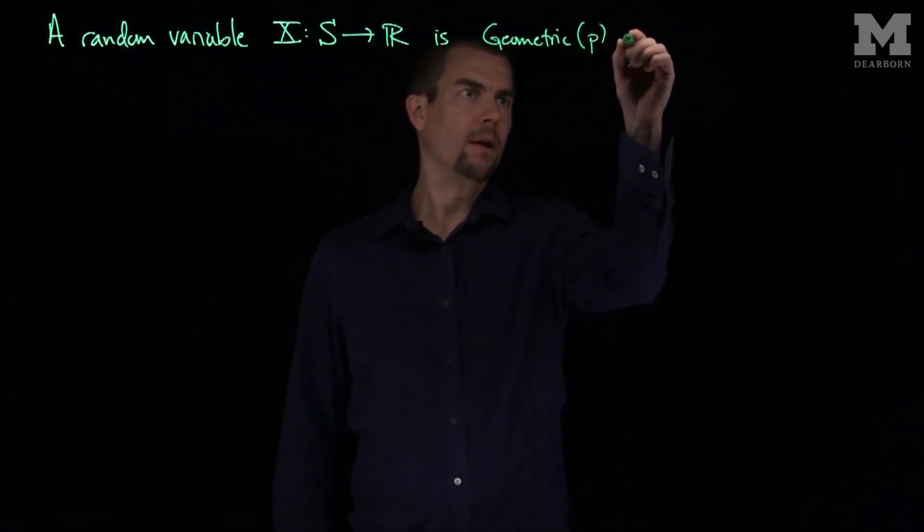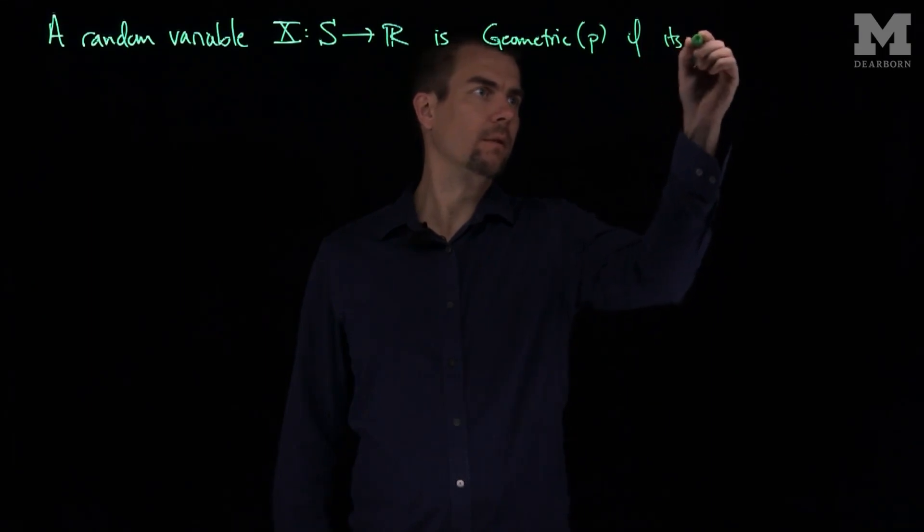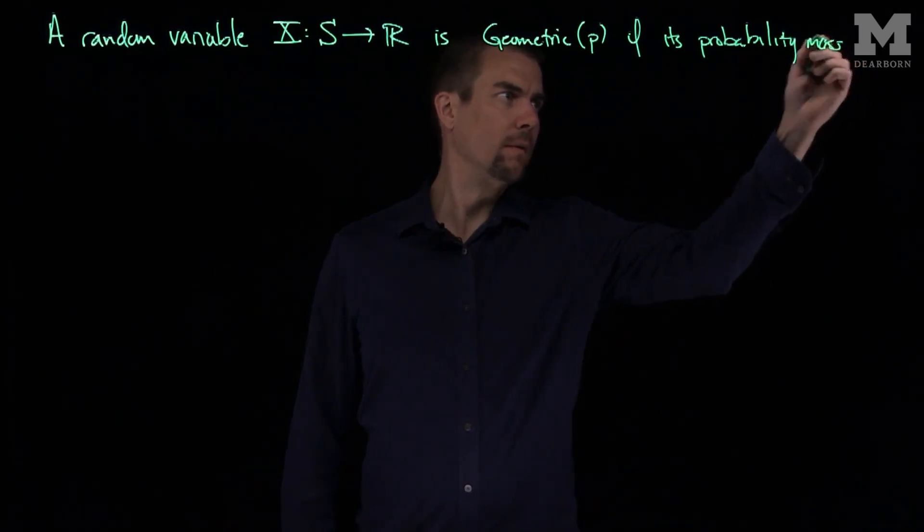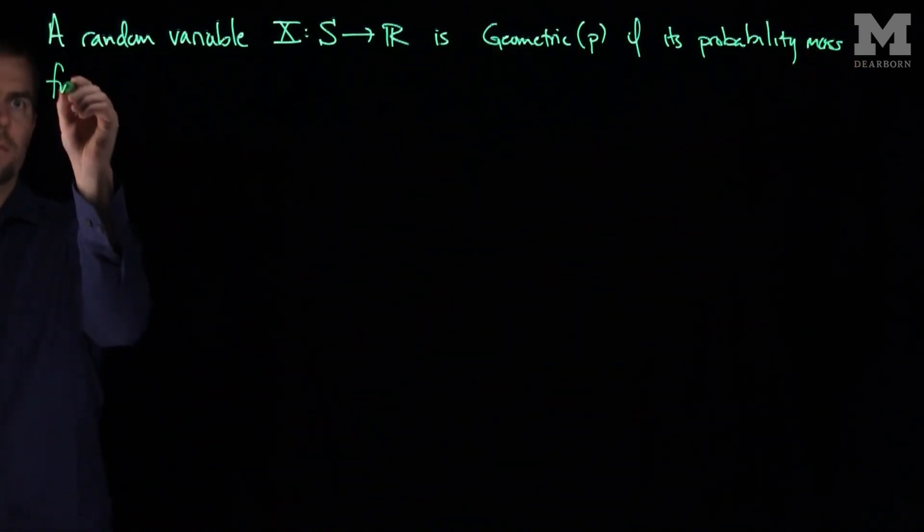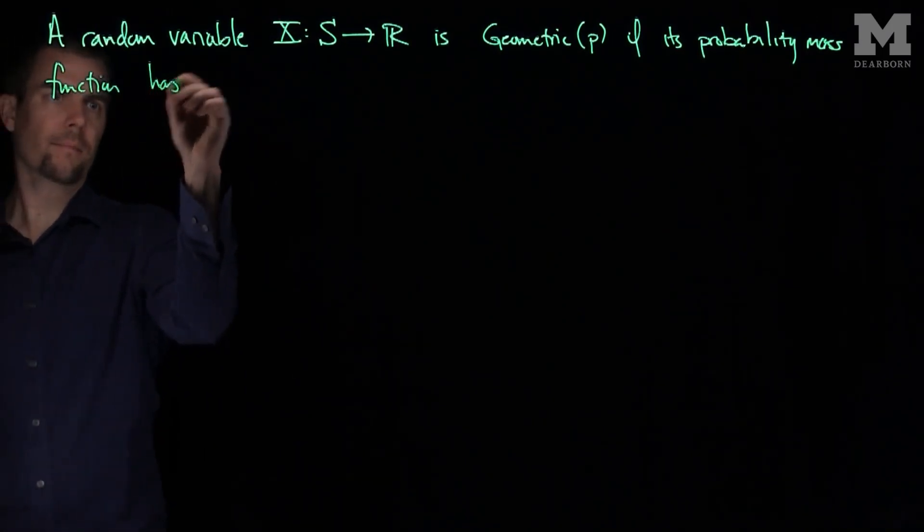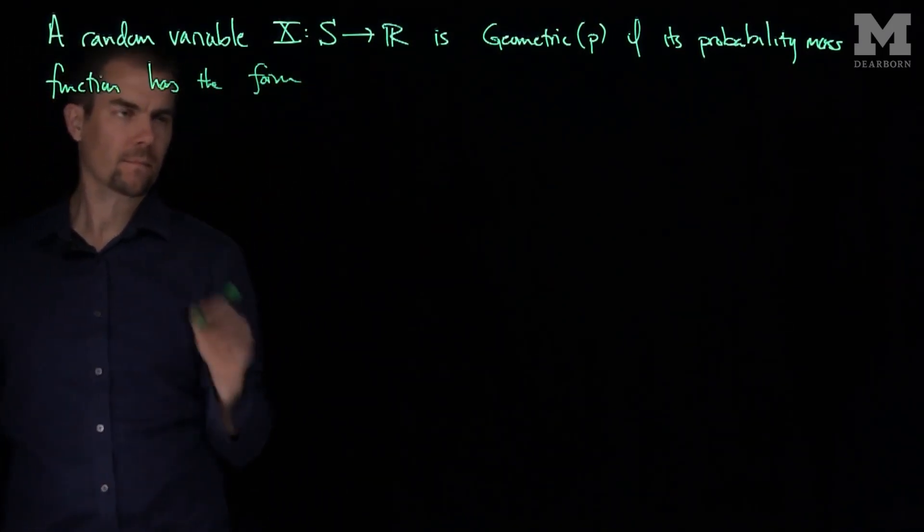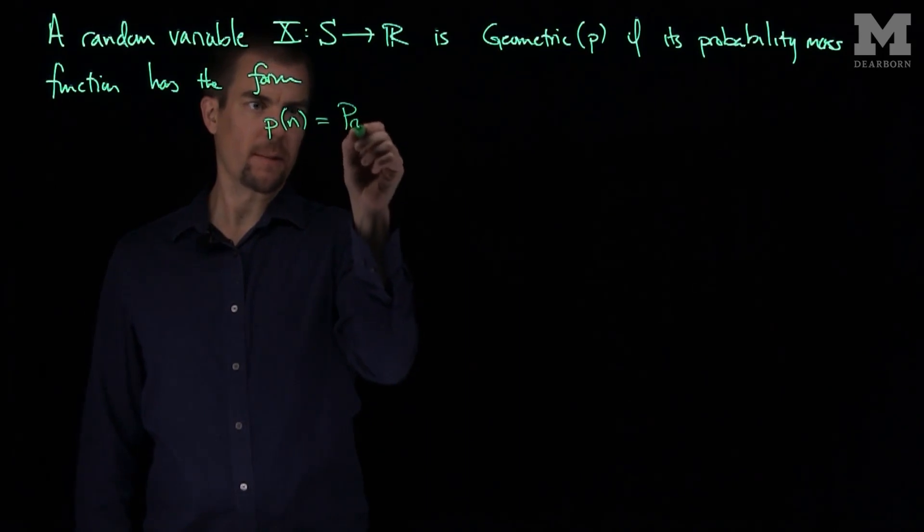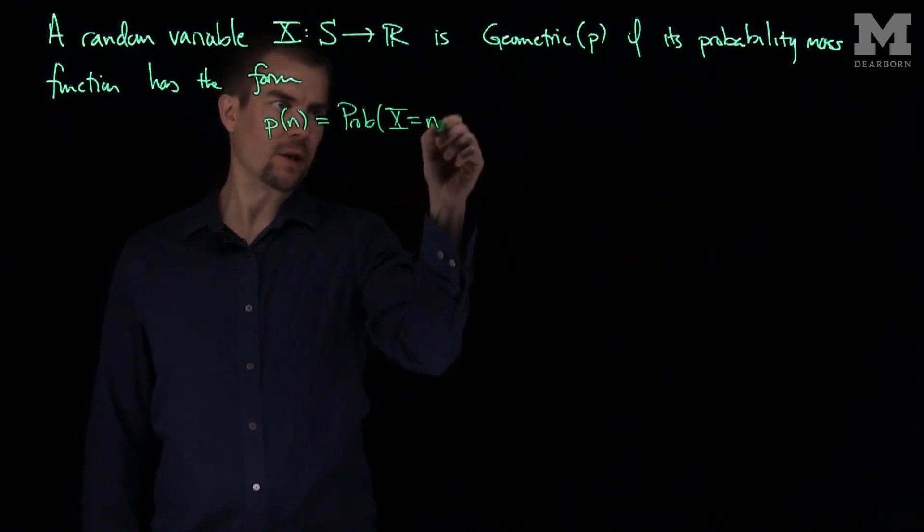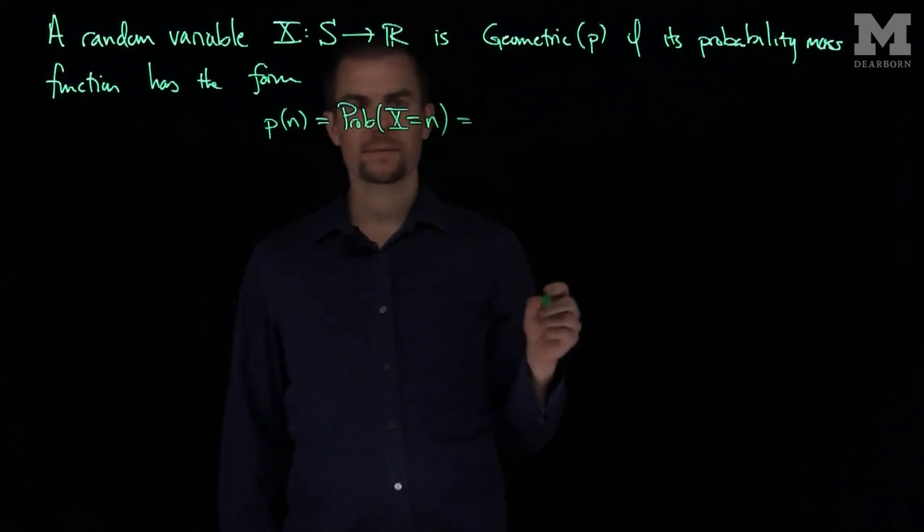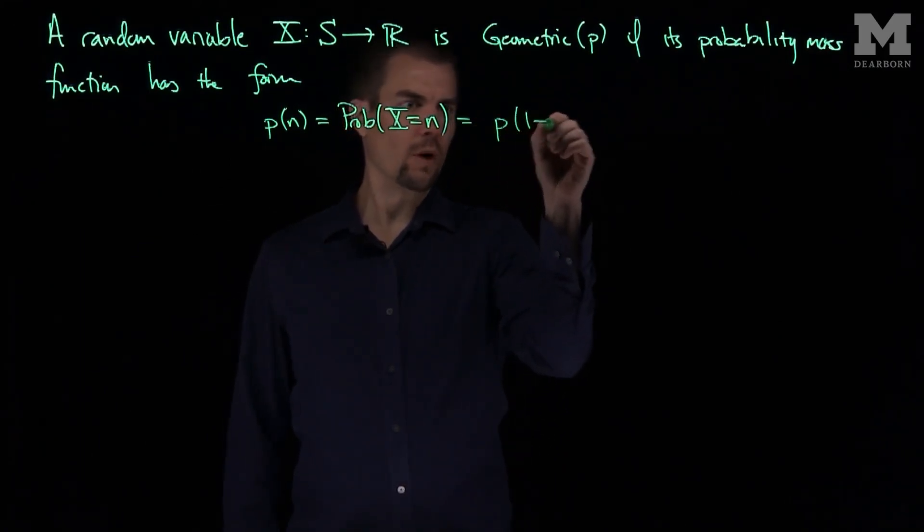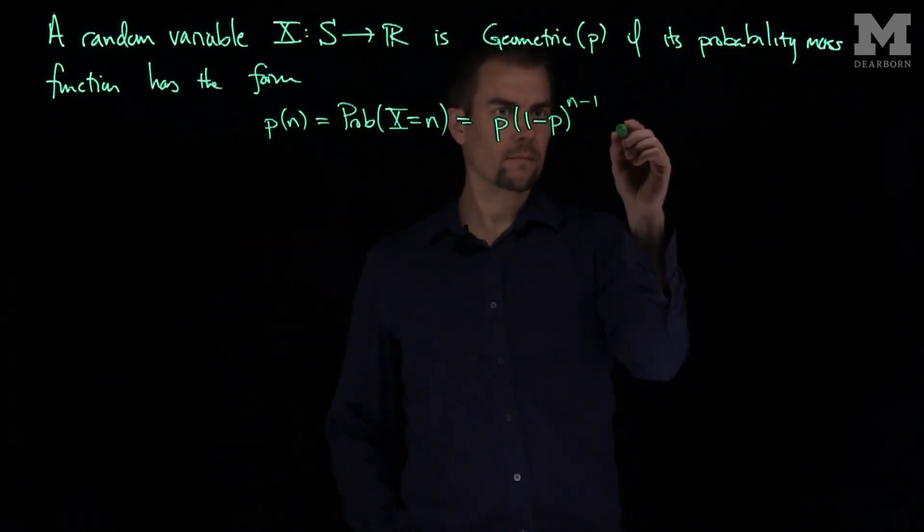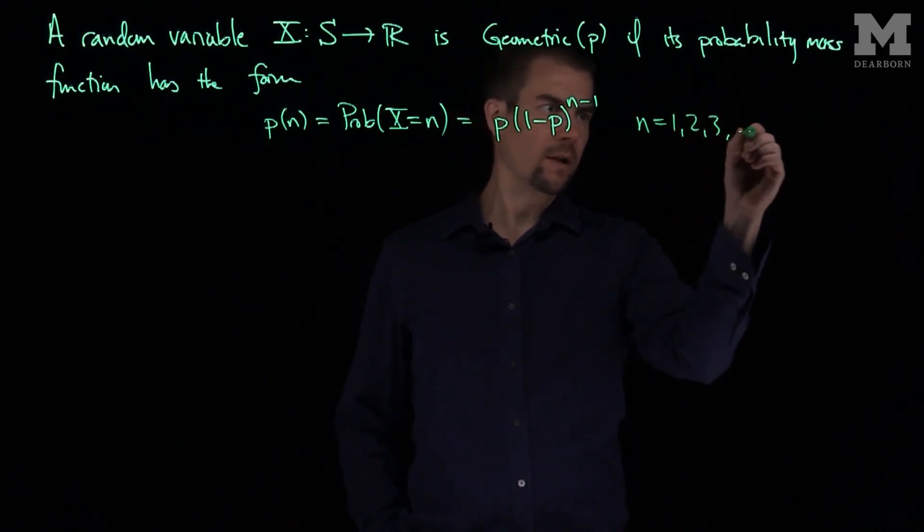with parameter p if its probability mass function has the form p(n), which is the probability that x is equal to n, is p times (1-p) to the n minus 1, for n equals 1, 2, 3, etc.